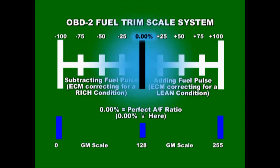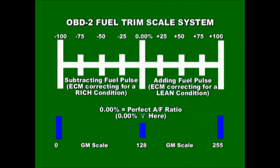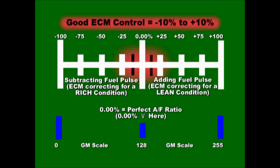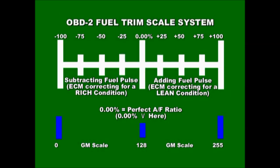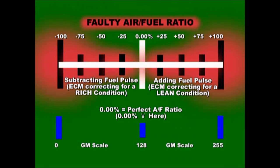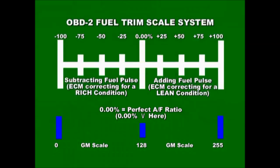As experienced technicians have seen, values can go even below 2.0 or above 3.8 milliseconds, depending on conditions like clear flood mode. To summarize the principles of fuel trims: if there's a rich condition, the ECM subtracts from the basic fuel injection; if there's a lean condition, the ECM adds to the basic fuel injection.